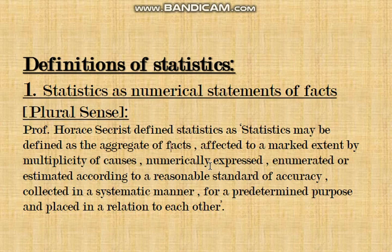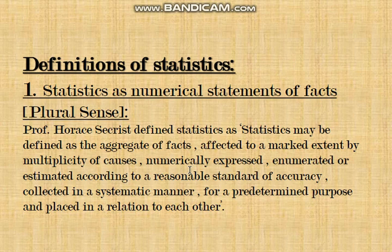You cannot select just one student and call the class brilliant or a failure. You need a bunch of facts — data from all groups. Statistics is an aggregate of facts, not a single fact. The second point is 'affected to a marked extent by multiplicity of causes' — once you select the students, you need to understand what factors are causing them to score the way they do.